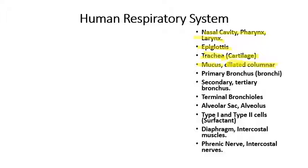The trachea goes down the center of your chest and then it bifurcates — the word bifurcate means it divides in two. So it bifurcates into two primary bronchi. Each of those primary bronchi then divides up into a number of secondary and tertiary bronchi.